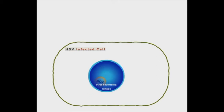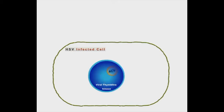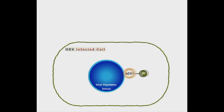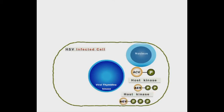Inside the herpes-infected cell, Acyclovir is phosphorylated by the viral thymidine kinase into Acyclovir monophosphate, then Acyclovir di- and triphosphate by the host cell.